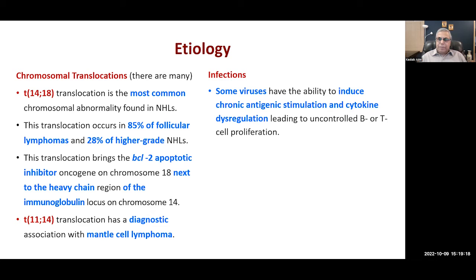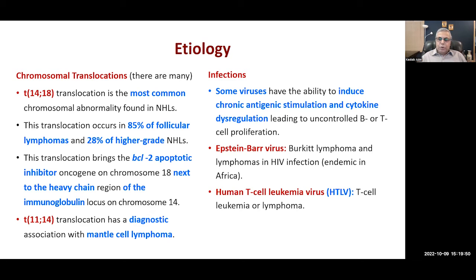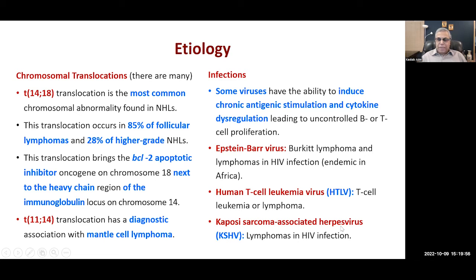Some viruses have the ability to produce cancer — they cause chronic antigenic stimulation and cytokine dysregulation, which lead to proliferation of B cells and T cells. Epstein-Barr virus produces Burkitt's lymphoma, which is the fastest-growing cancer in humans — it can double its size within a week or maybe a couple of days. Human T-cell leukemia virus is another one, and Kaposi sarcoma-associated herpesvirus — Kaposi sarcoma is common in HIV infection and is caused by herpes virus.